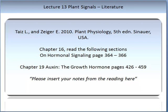It is very important that you read the associated literature with this topic. Please read Taiz and Zeiger's 'Plant Physiology,' 5th Edition, Chapter 16 — the section on hormone signalling, pages 364 to 366 — and the entire Chapter 19, 'Auxin: The Growth Hormone,' pages 426 to 459. Please make relevant notes and insert your reading at this stage of the lecture.